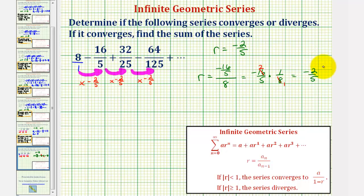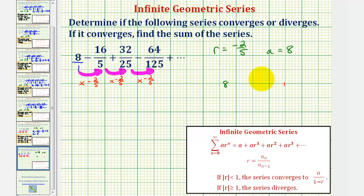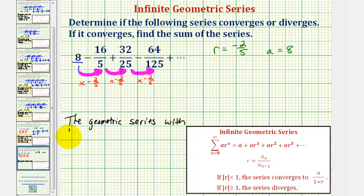For this geometric series, the common ratio R equals negative 2/5 and the first term A equals 8. Because the absolute value of R — the absolute value of negative 2/5, which equals 2/5 — is less than 1, we know the series converges.